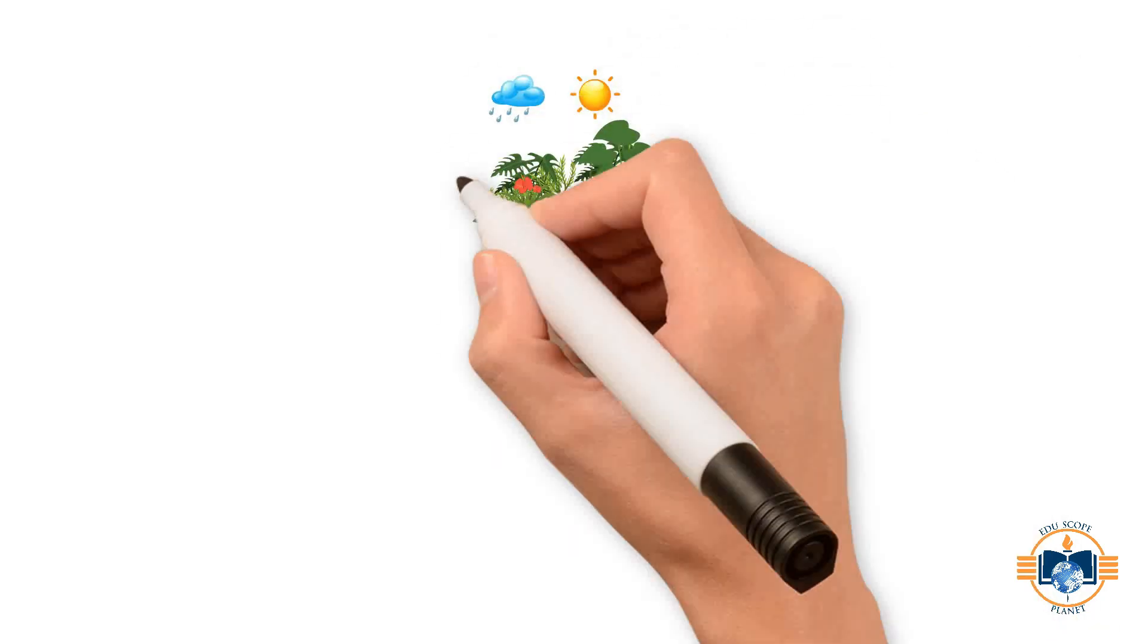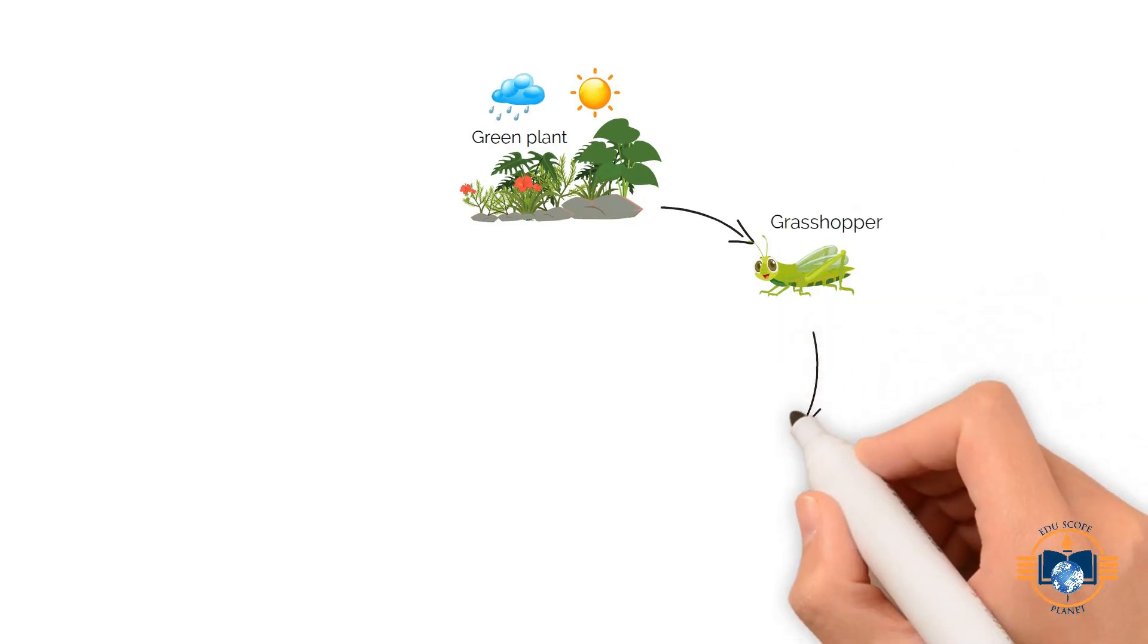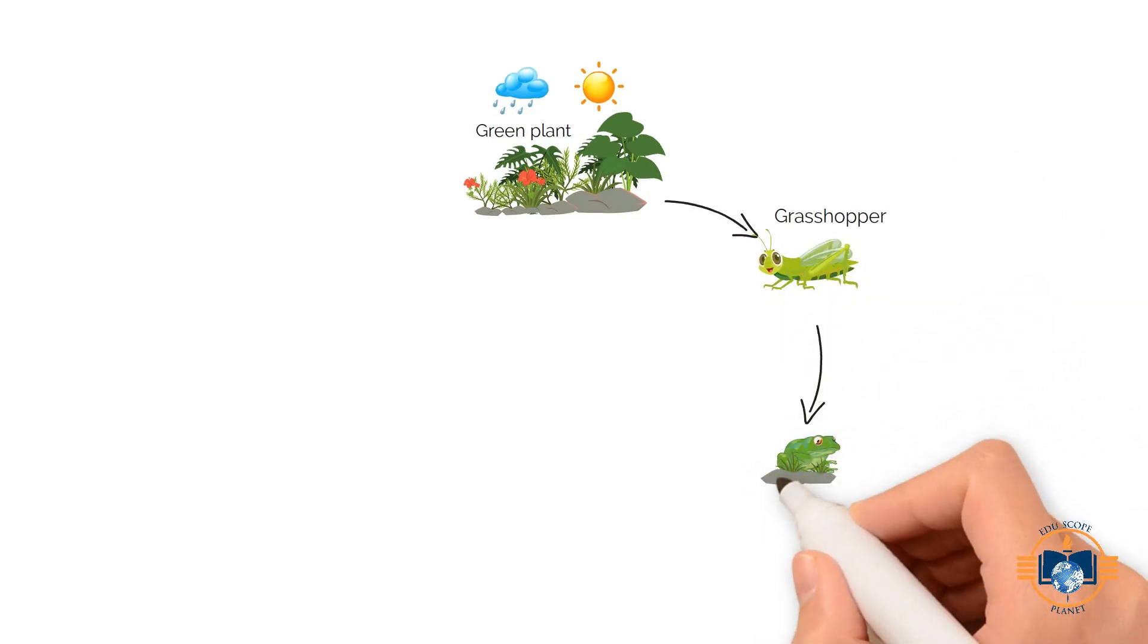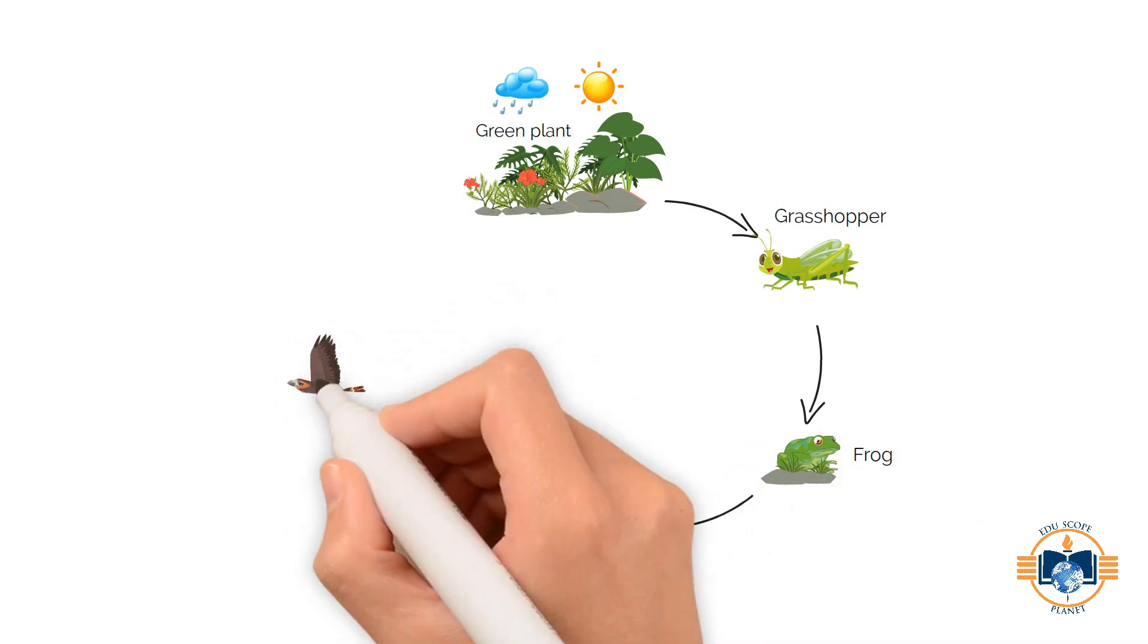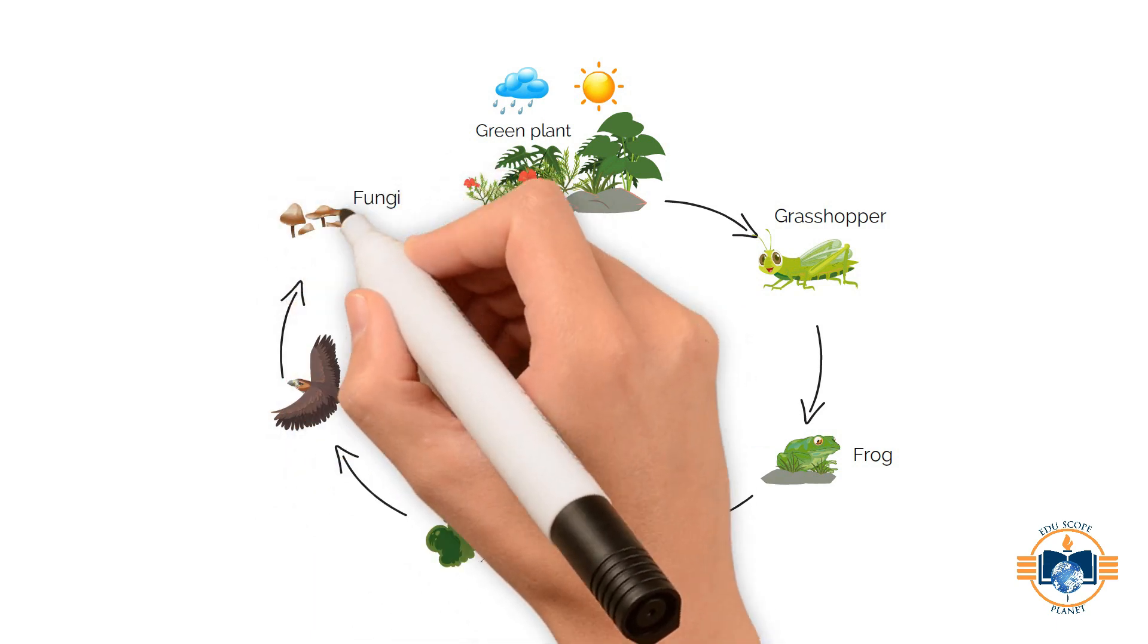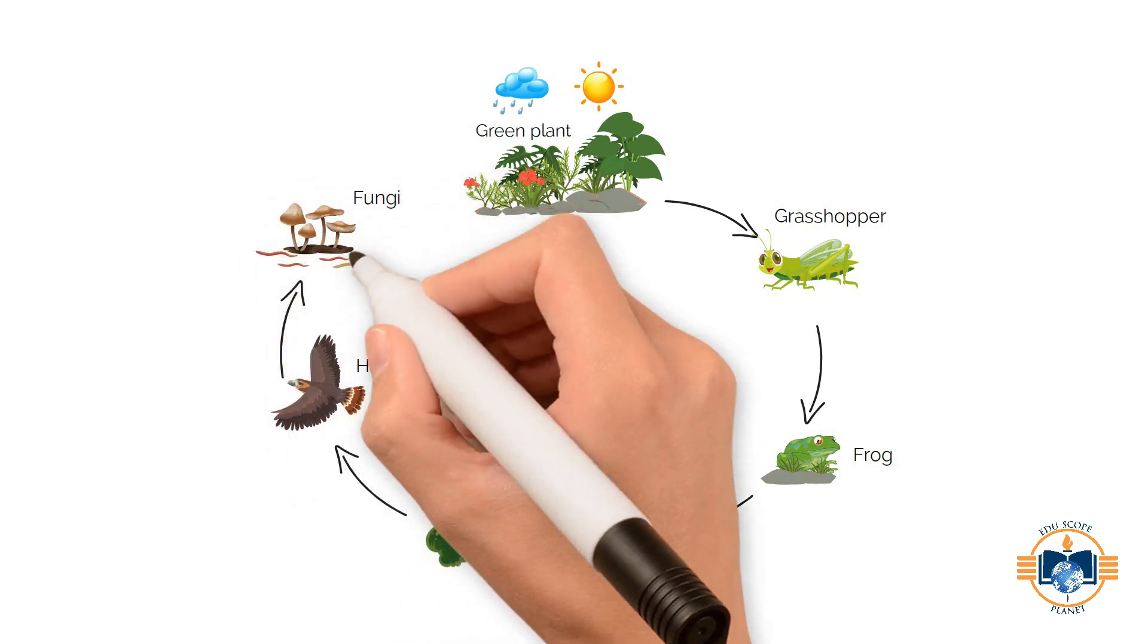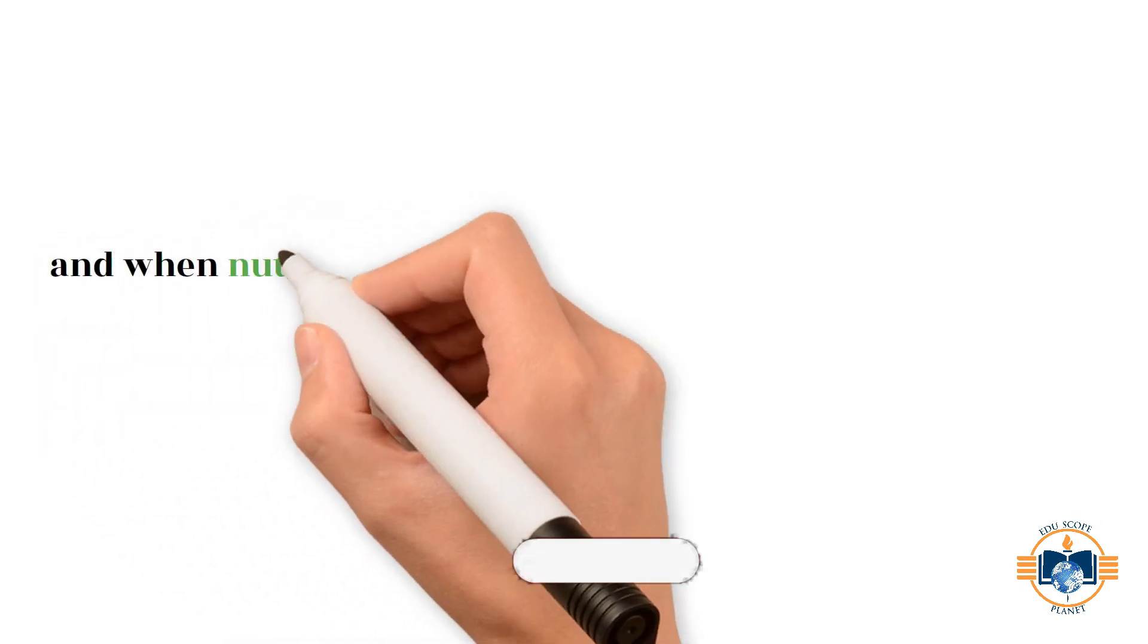Grasses and small trees are eaten by grasshoppers. Grasshopper is eaten by a frog. The frog is eaten by a snake. A snake is eaten by a hawk. At the end of the chain, when hawks die, fungi and other decomposer animals take care of the waste in the food chain by consuming dead animals. And when nutrients return to the soil, a new food chain begins.